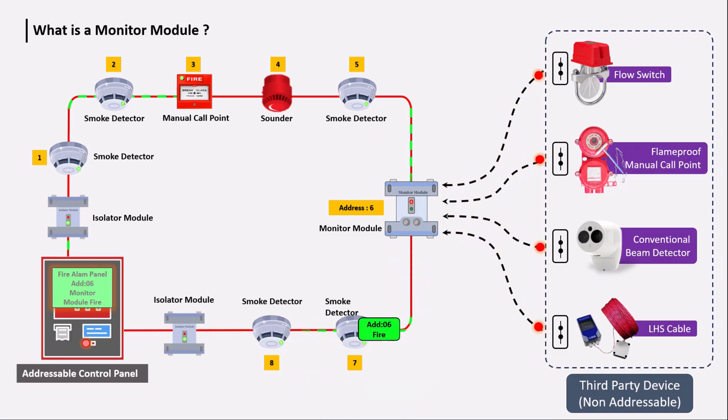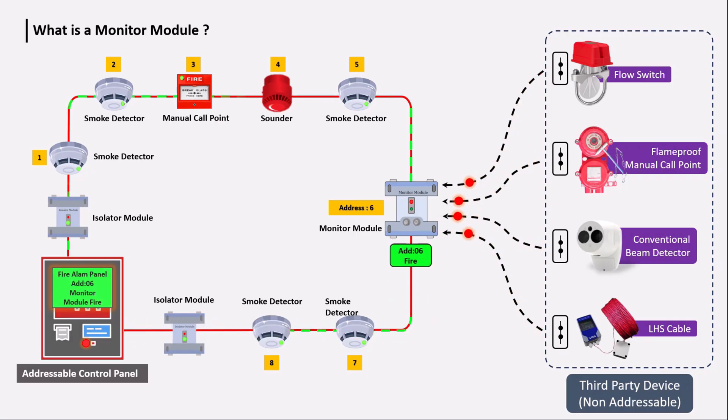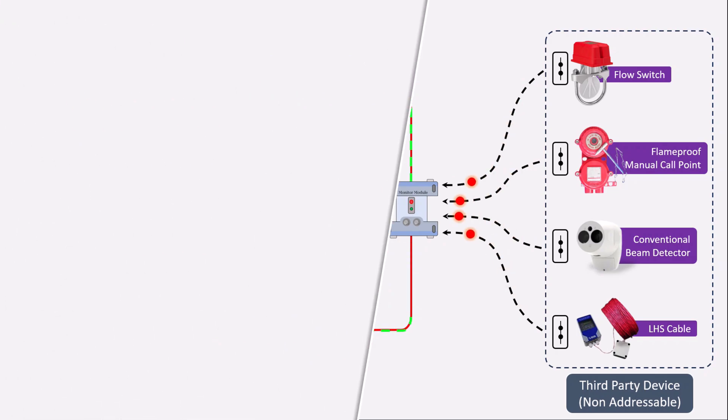The output of a third-party device is a dry contact — common, NO, and NC — and there is no need to provide any external power supply to the monitor module. Let's see the working of the monitor module with an example.